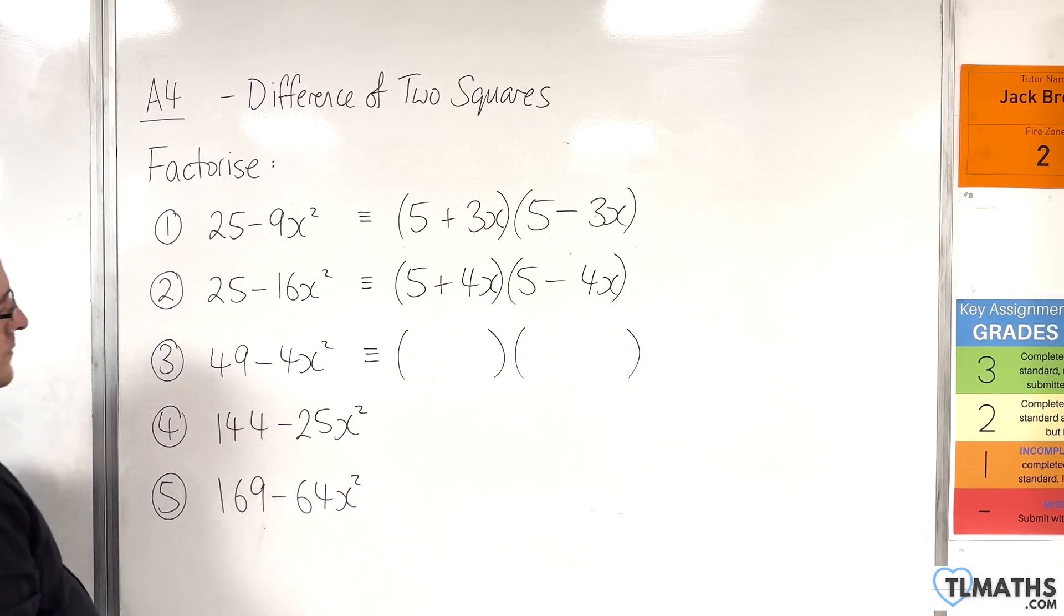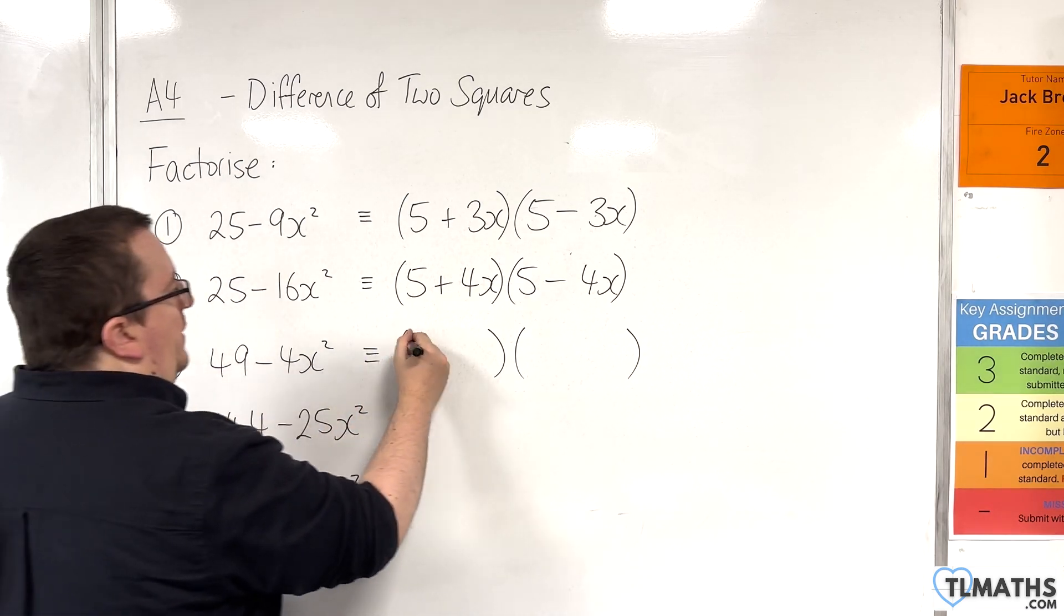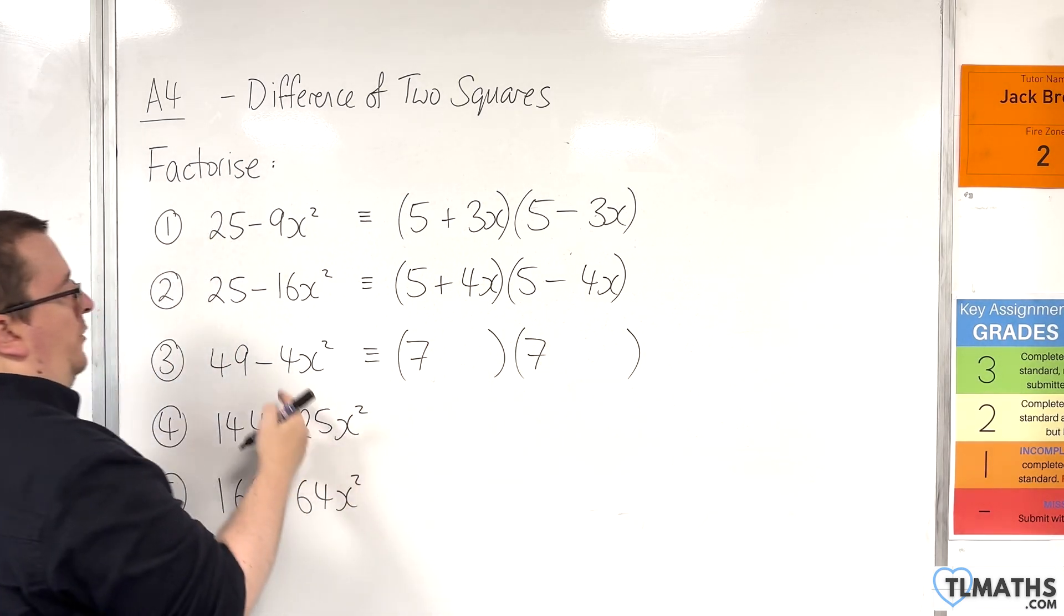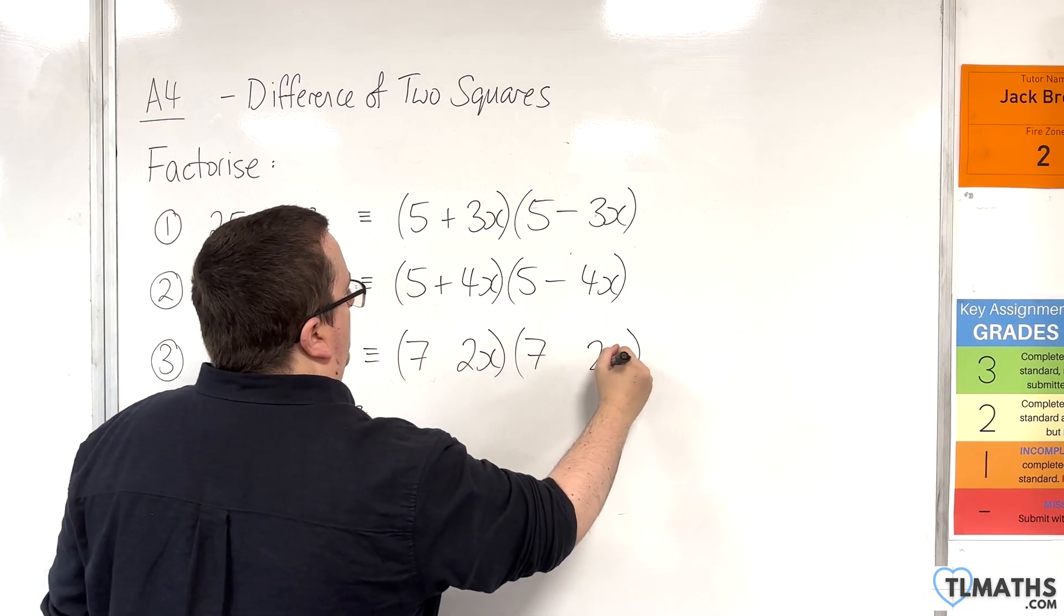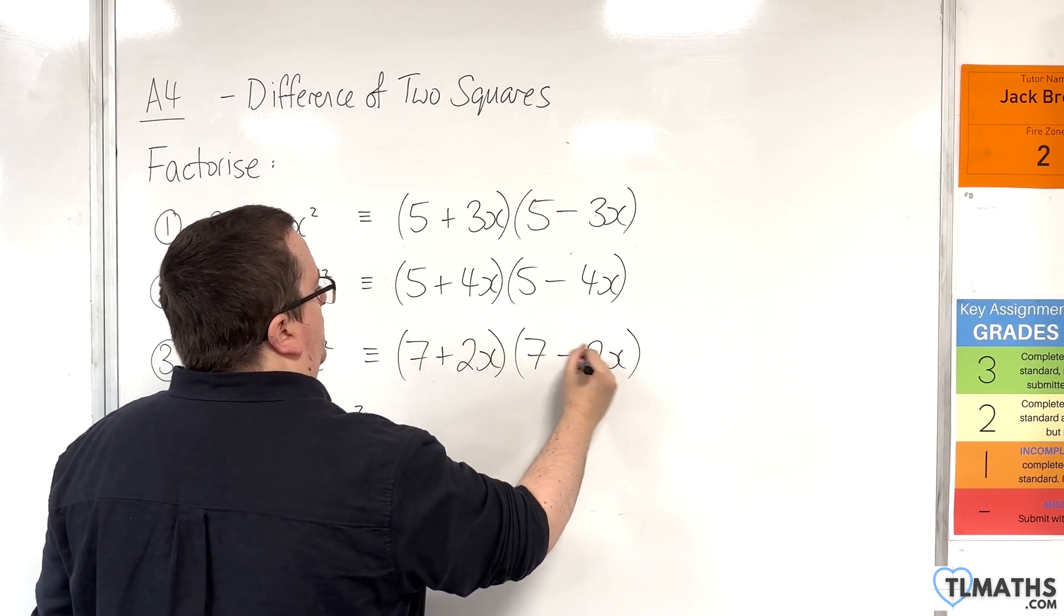Number 3. The square root of 49 is 7. The square root of 4x squared is 2x. One's a plus, one's a minus.